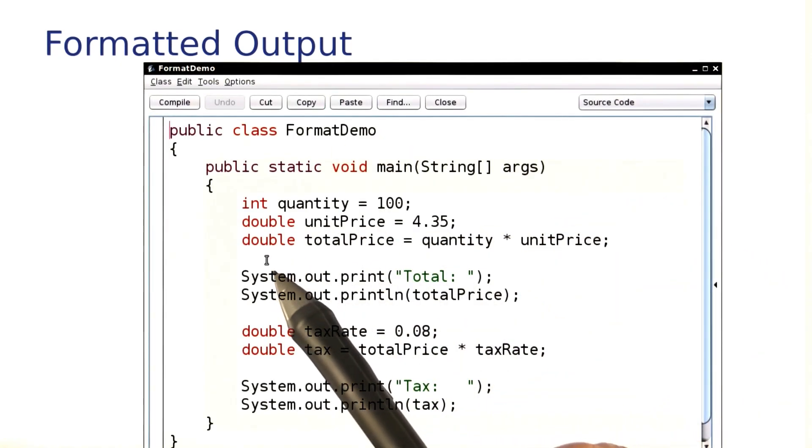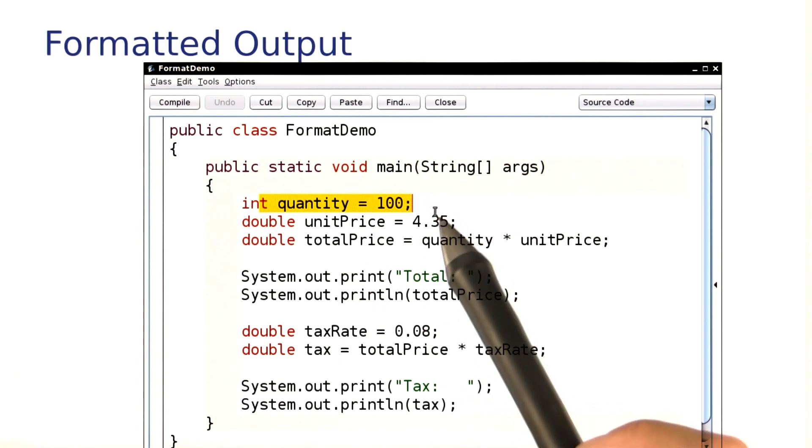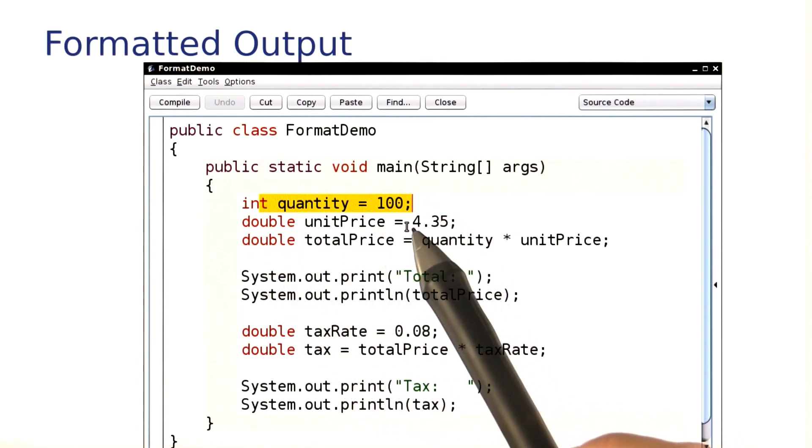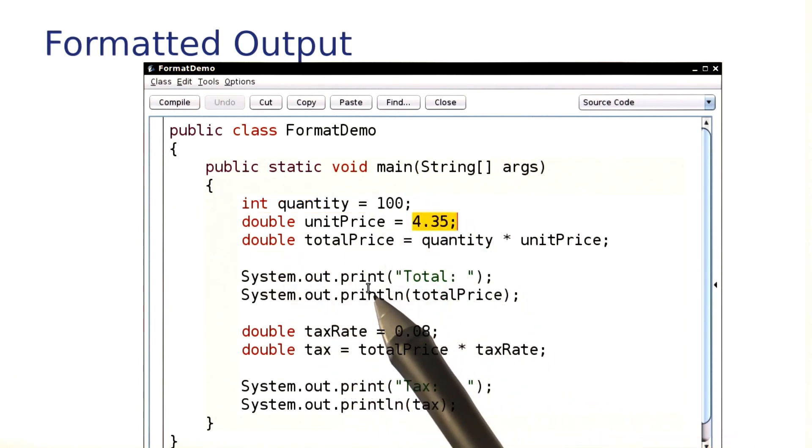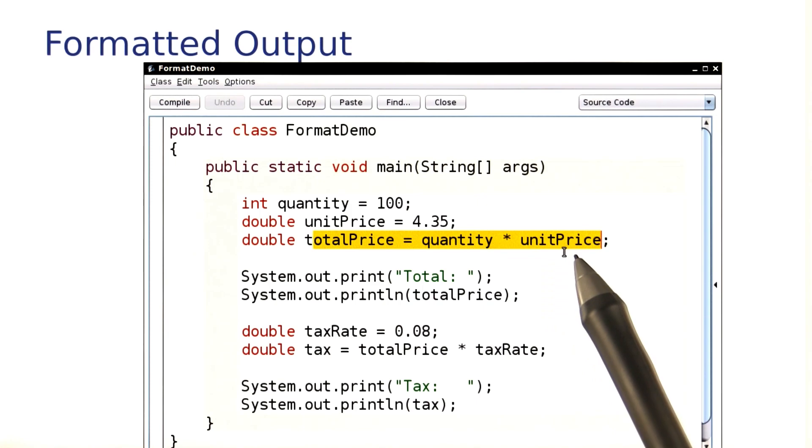Let's look at this program here. I want to buy 100 cans of my super premium cat food at $4.35 a can, so my total price is going to be the quantity times the unit price.